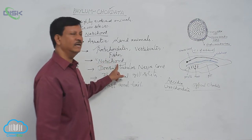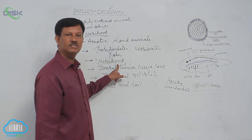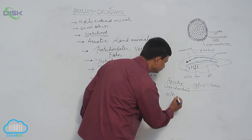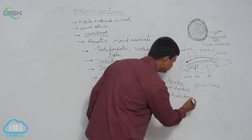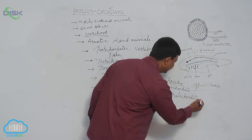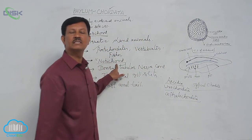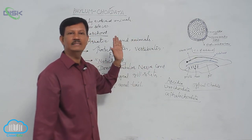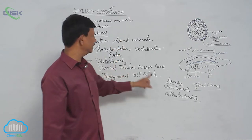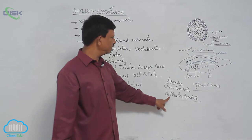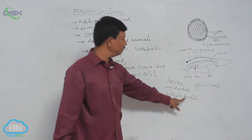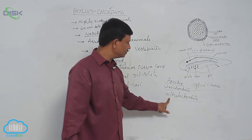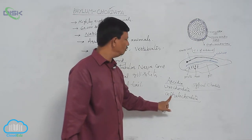In some animals, for example Branchiostoma or Cephalochordata, notochord is present throughout their life from the posterior end to the anterior end. Notochord is also situated at the head region. Hence, they are known as Cephalochordata — 'cephalo' means head, 'chord' means notochord. That is why the name is derived as Cephalochordata.